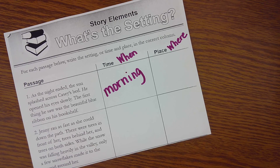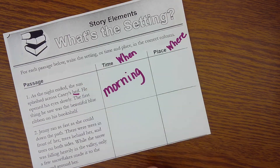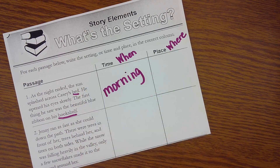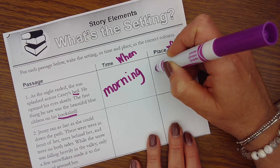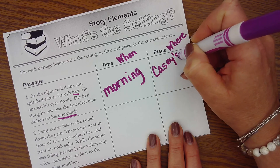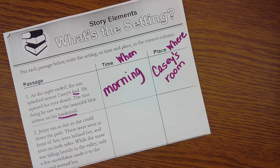Now where is he? Once again, the author's not telling us exactly where he is, but I saw clues. There's the word bed — that could be a clue. His bookshelf might be a clue. So if I think about this and I'm using my thinking voice, I bet the place is Casey's room — or you could have said Casey's bedroom.